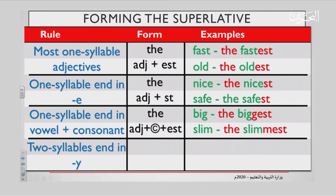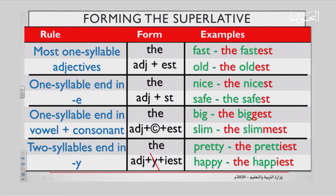A fourth rule: two-syllable adjectives that end in Y. You take the adjective, cross out the Y, and add IEST. For example, pretty — a two-syllable adjective — you cross out the Y, add the, and say the prettiest. Happy — the happiest. Happy ends in Y.